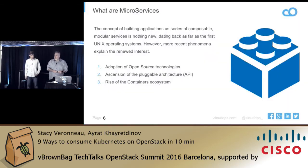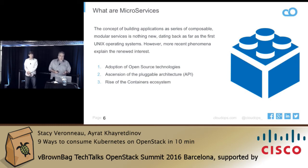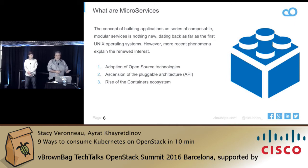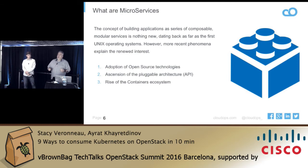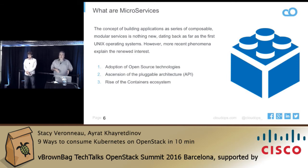I just wanted to start quickly by talking about microservices, because that's the idea behind Kubernetes and using Docker in the backend. It's not something new — everything old is new again. It's just getting traction with the adoption of open source technologies, the ascension of pluggable architecture, OpenStack being a great example, and the rise of the container ecosystem. Just imagine trying to do what we're doing today if everything was a silo, fully locked in with a vendor license — we'd go nowhere.